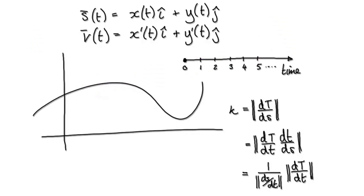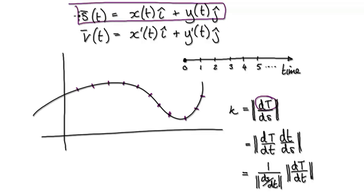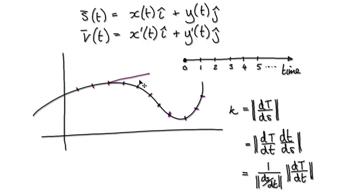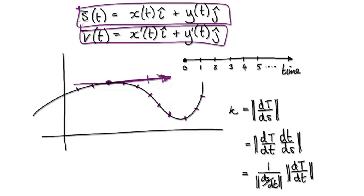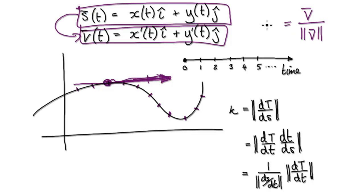A fair way to describe the curvature would be to split everything up into equal lengths and then look at the tangent. Given the position vector, if you differentiate it, it will give you the velocity. Velocity is always tangent to the path, so this vector here represents the velocity. But then we want to look at the unit velocity — we would work out the magnitude and then divide by the magnitude of this velocity. That would then give you the unit tangent.